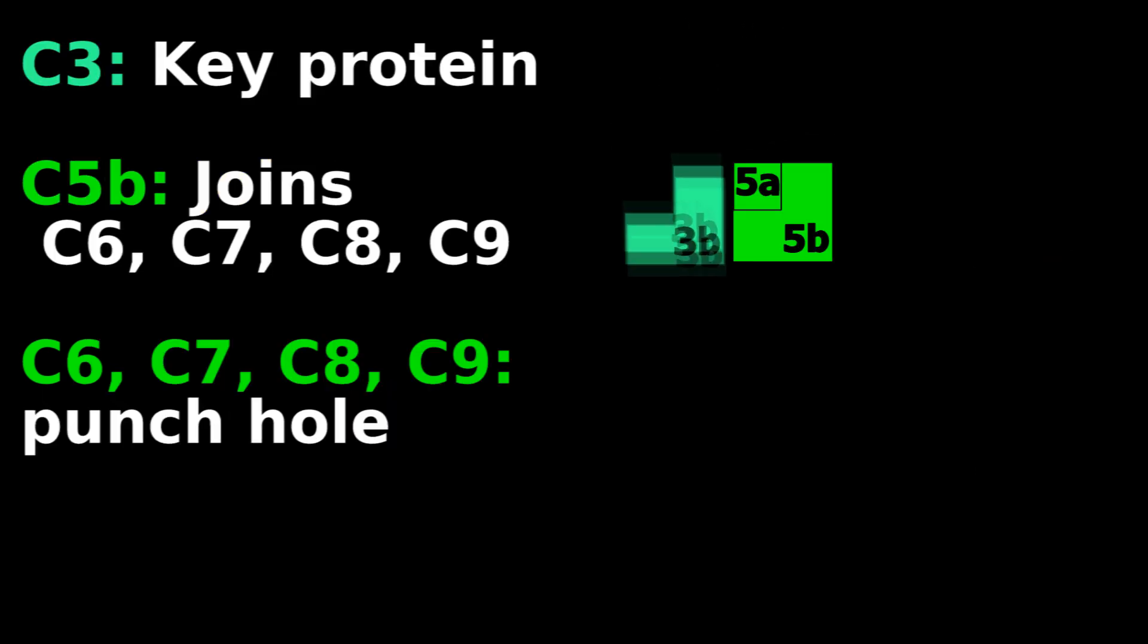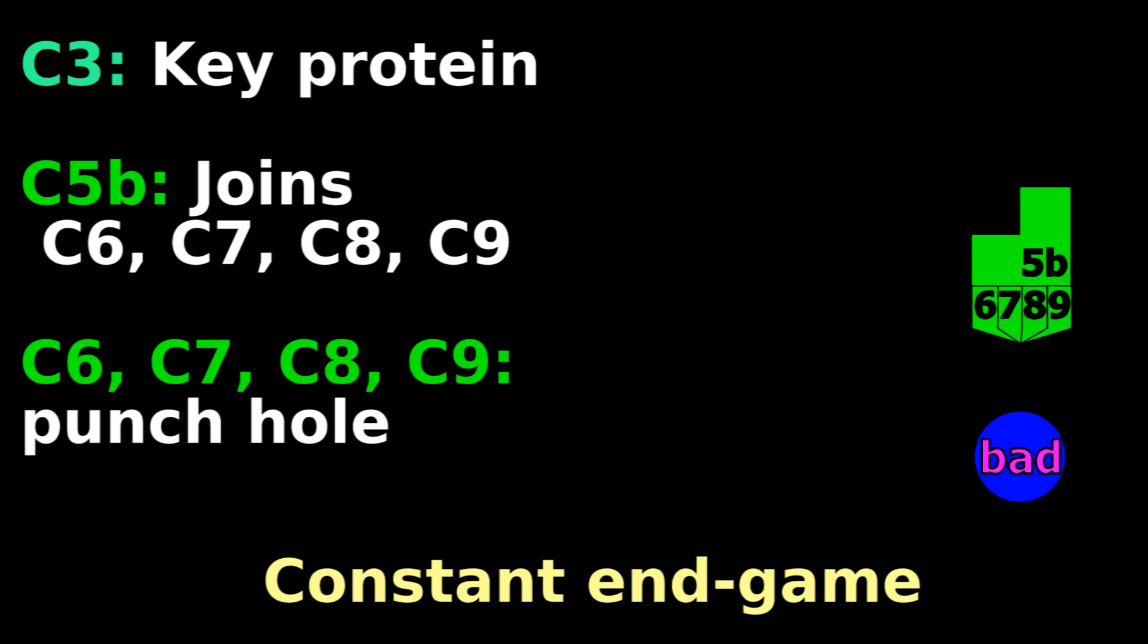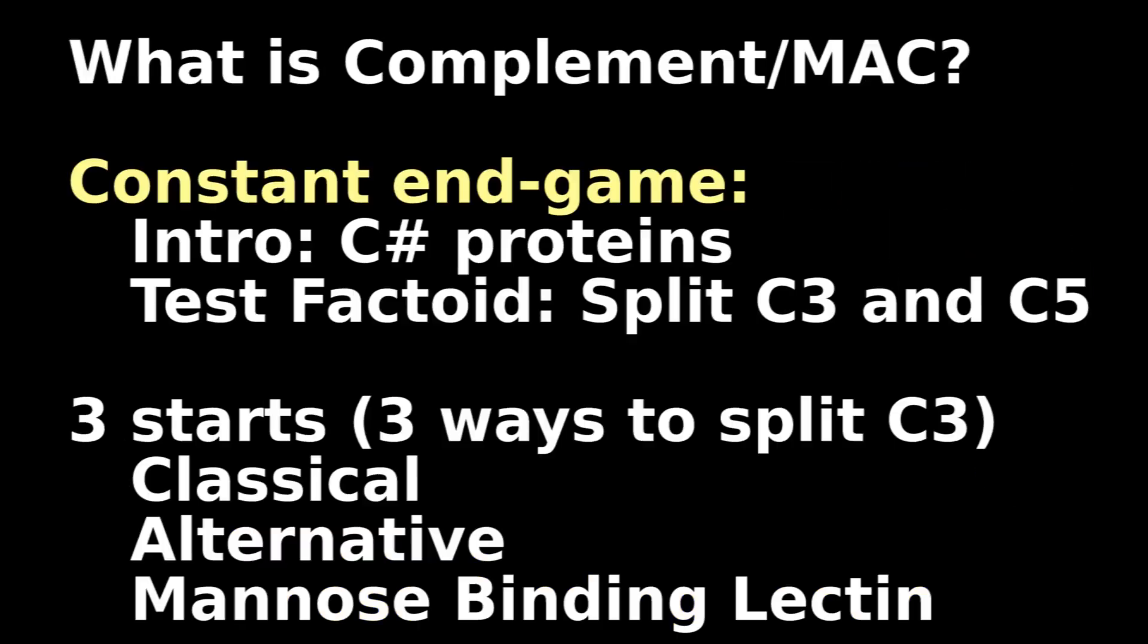This sequence of protein activation is the constant endgame that always happens regardless of how the complement cascade starts. Now that we know the constant endgame, let's look at the three different ways to start complement, or three ways to split C3, the key protein.